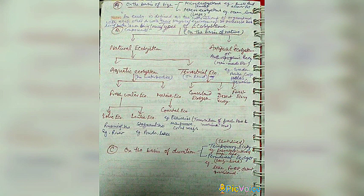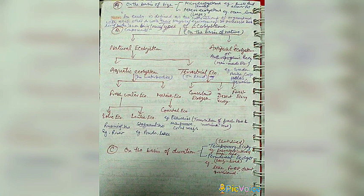Terrestrial ecosystems are of three types: grassland ecosystem, desert ecosystem, and forest ecosystem. Forest ecosystem is further divided into four parts: tropical rainforest, tropical deciduous forest, temperate broadleaf forest, and temperate coniferous forest. Artificial ecosystems include garden, park, crop field, aquarium, dam, and agro-farming ecosystem.